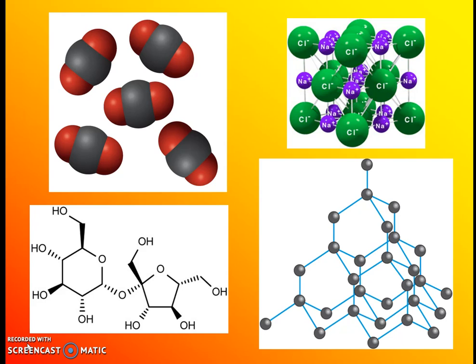Finally, here is the diamond structure. It is just a tetrahedral arrangement of carbons bonded over and over again, sharing pairs of electrons and continuously building out a pattern of tetrahedral after tetrahedral — a network solid. In order to melt diamond, you have to break apart every single one of those covalent bonds, which requires quite a bit of energy.